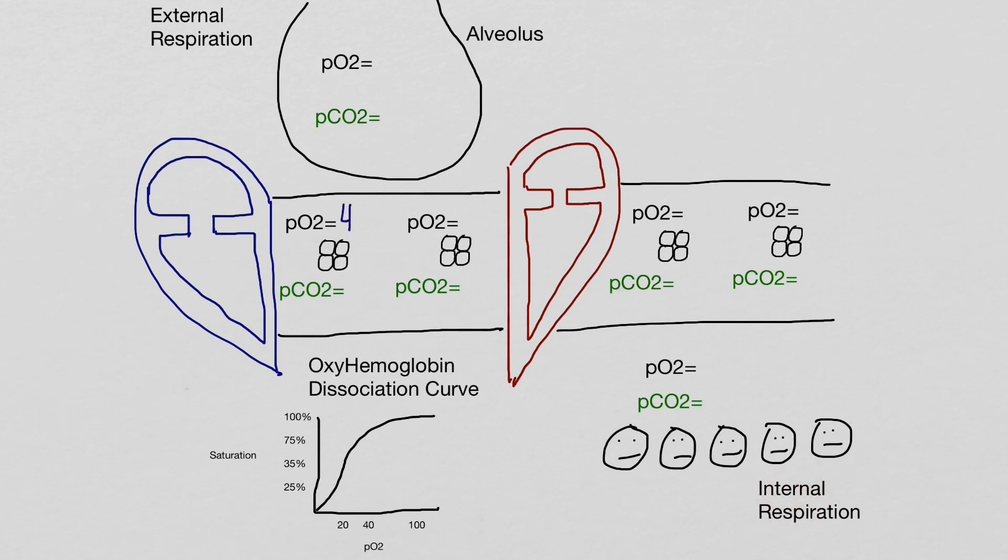When the deoxygenated blood returns to the lungs, to the pulmonary arteries, the partial pressure of oxygen will be 40, and the partial pressure of carbon dioxide will be 45.